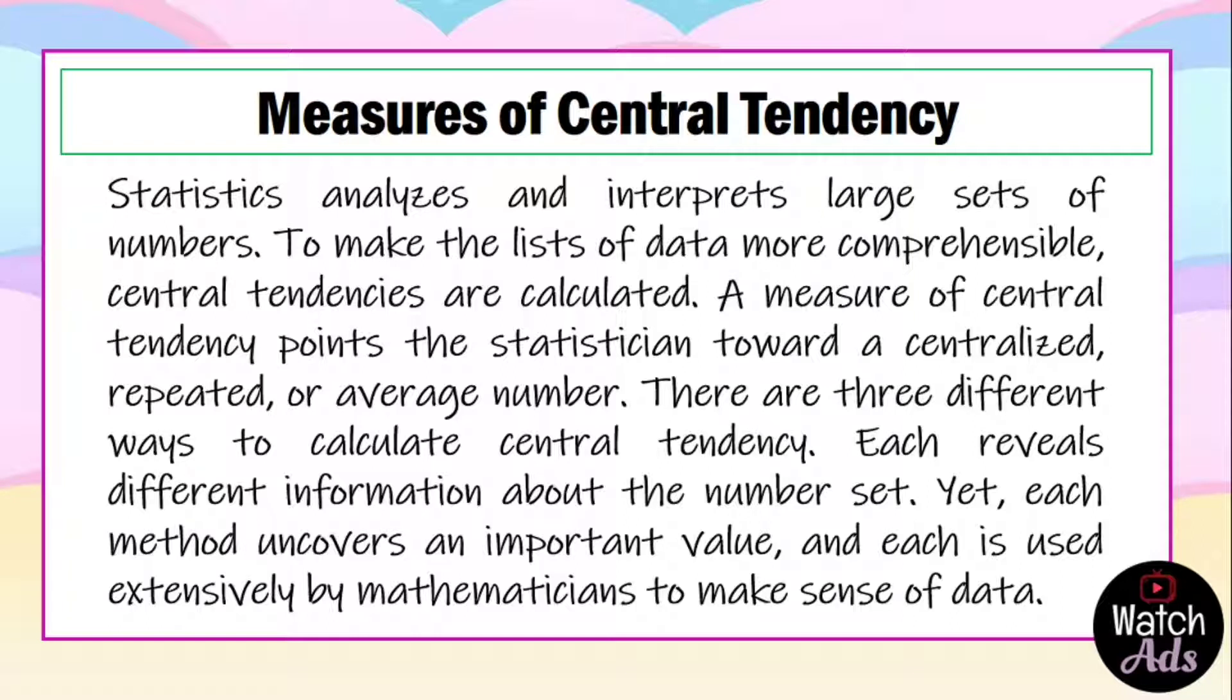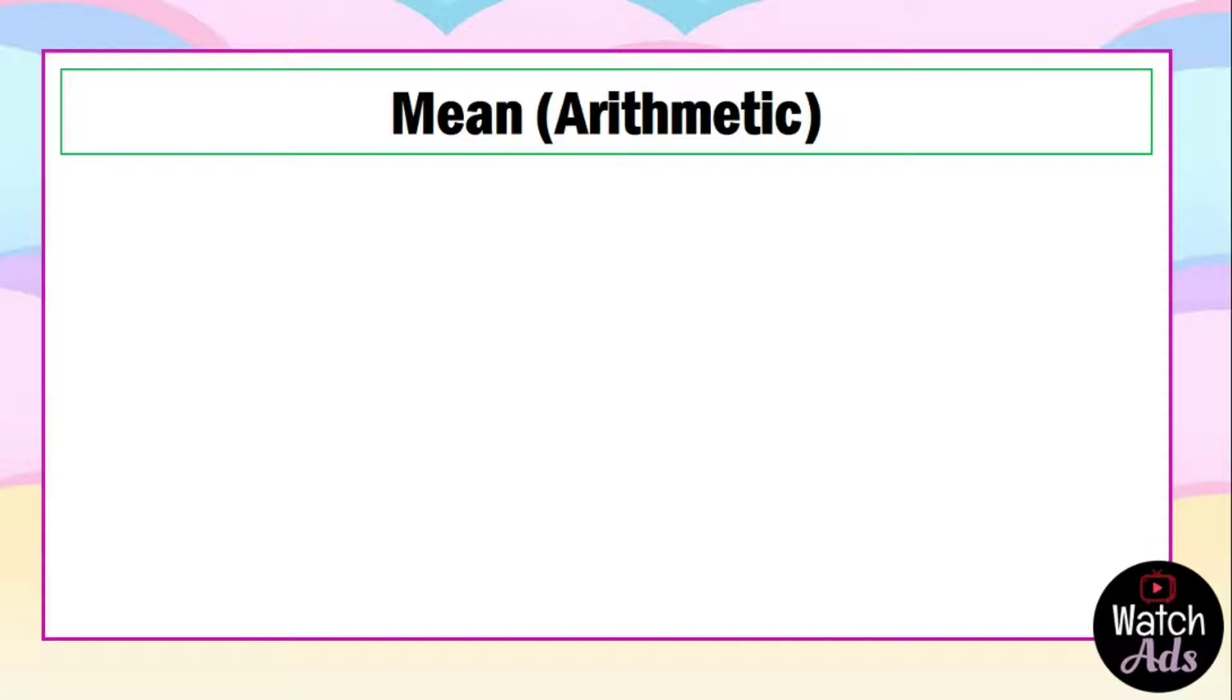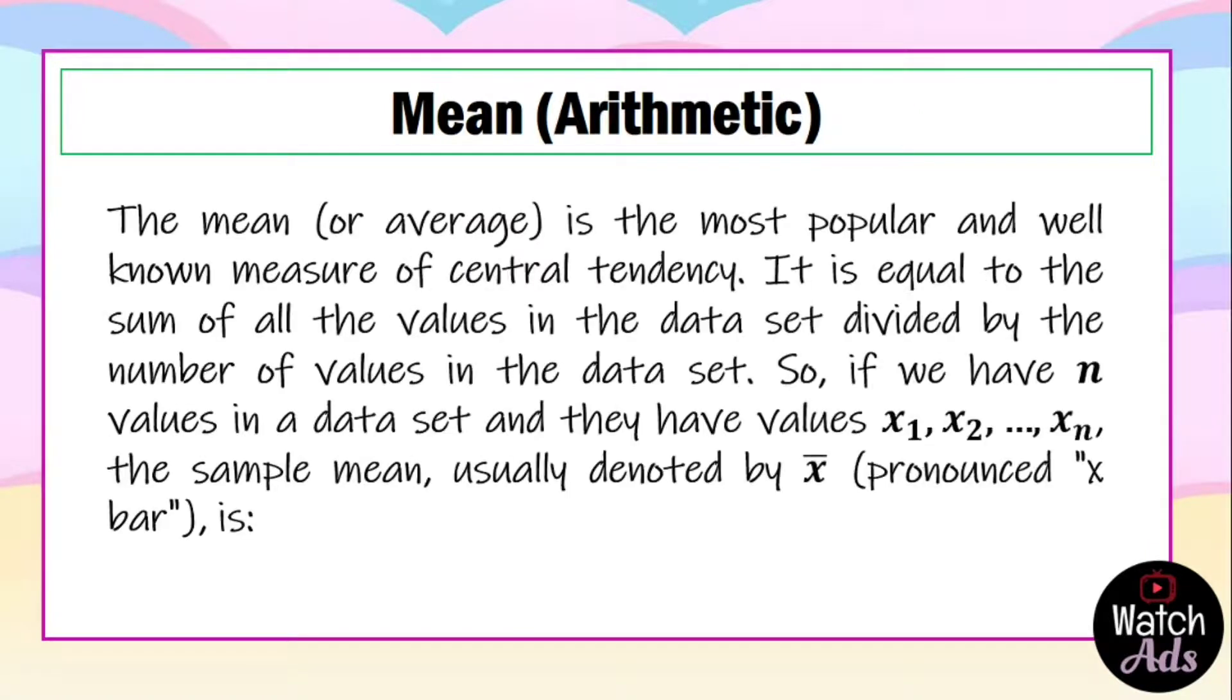The first measure of central tendency is the arithmetic mean. The mean or average is the most popular and well-known measure of central tendency. It is equal to the sum of all the values in the data set divided by the number of values in the data set.